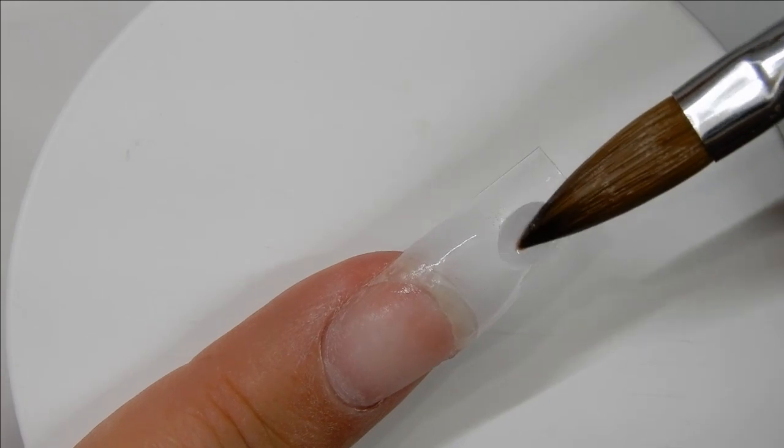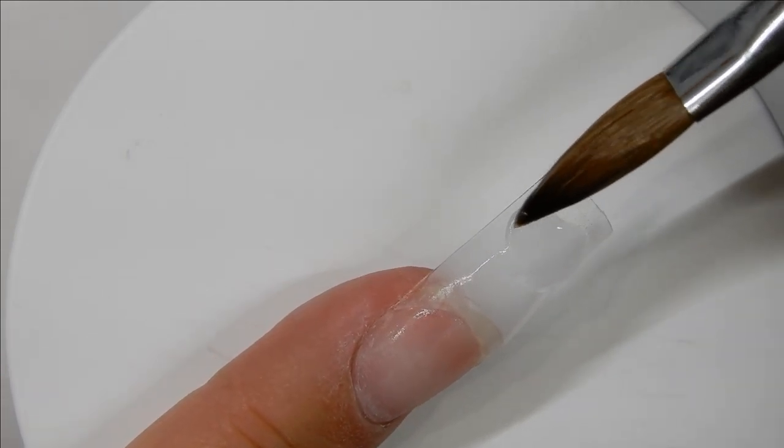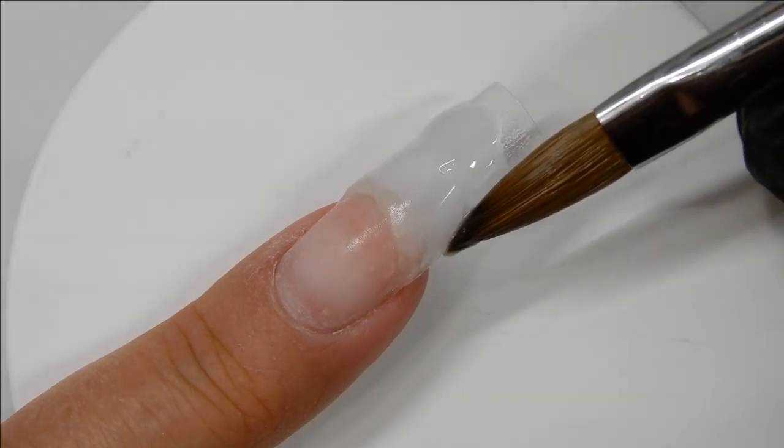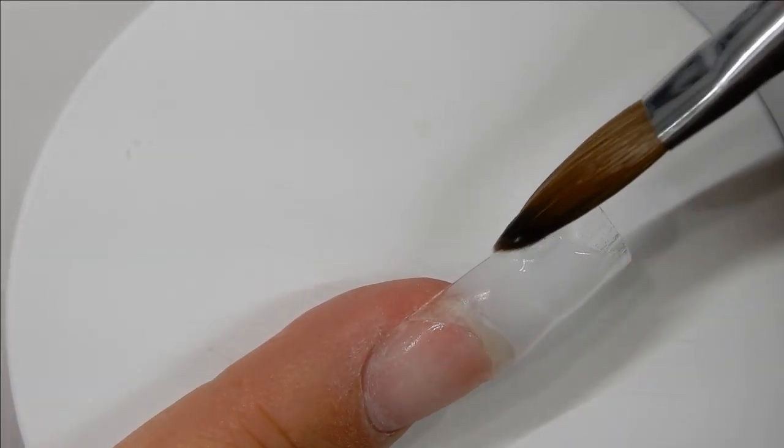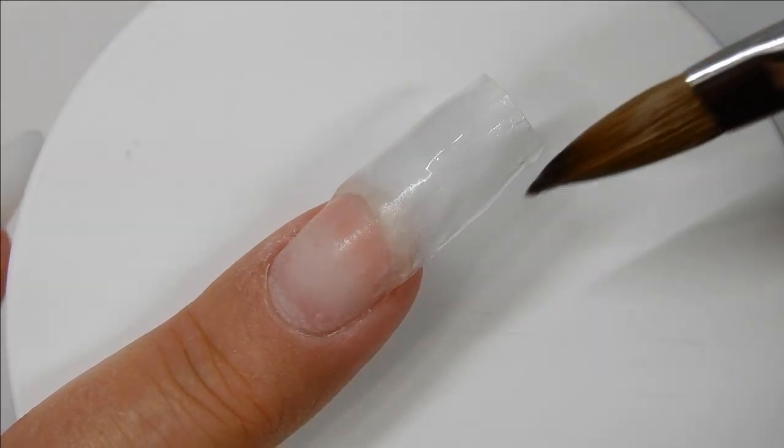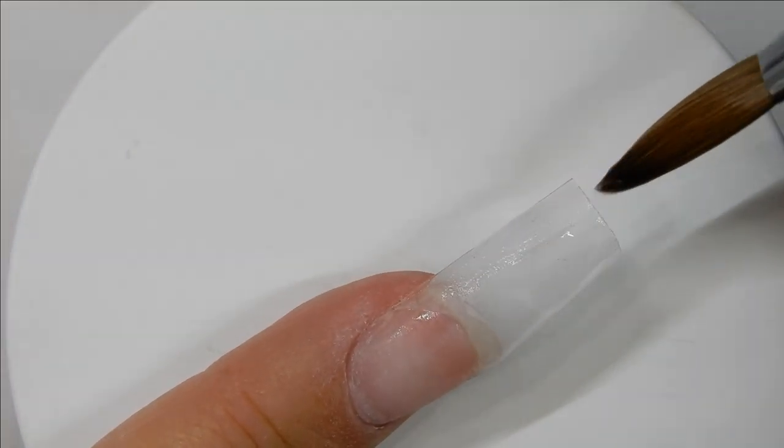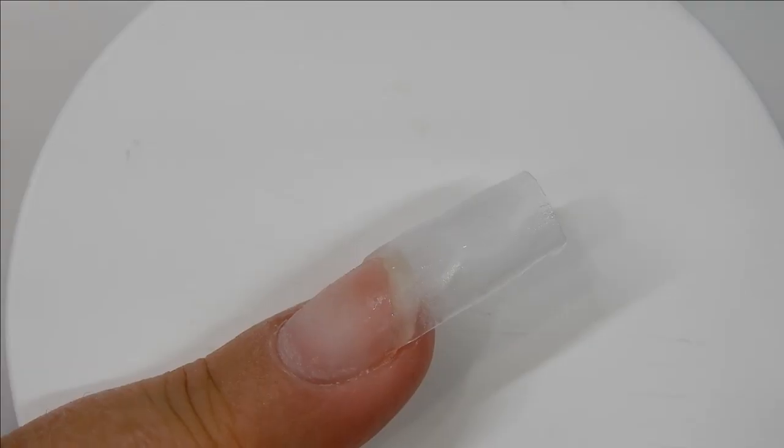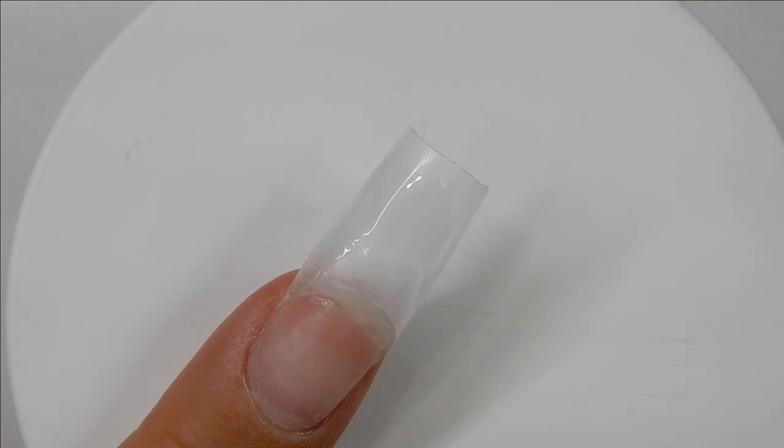If it's hot in your home or your studio, your acrylic is probably going to set faster. If it's colder, your acrylic will set slower. When I recorded this video it was cold here, so it took a little bit longer.